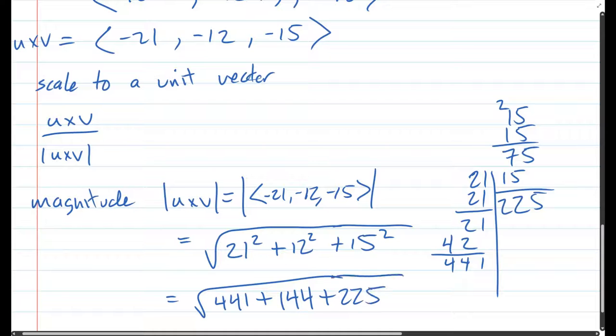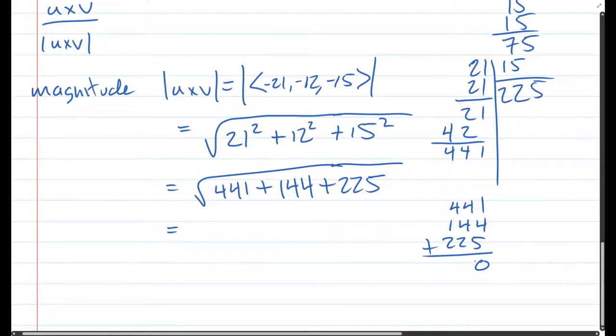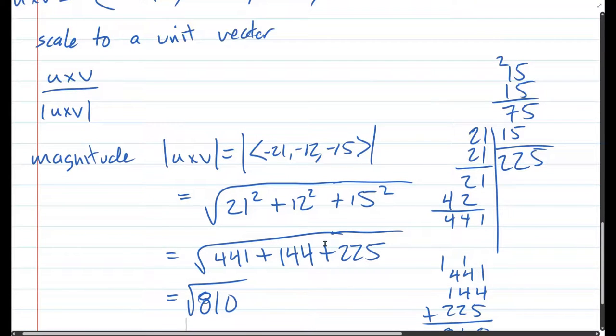Still gotta add all these together: 441, 144, 225. 0, carry the 1, 8, 10, 11, carry the 1, 3, 4, 8, 10. I don't think this has a nice square root, so we're gonna just leave it like that.